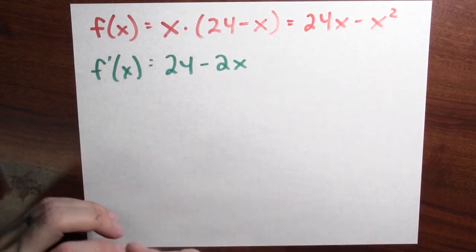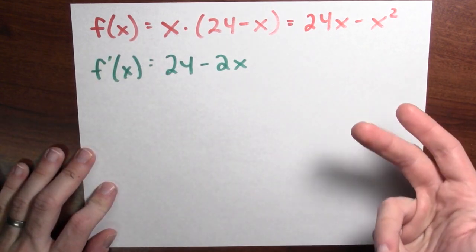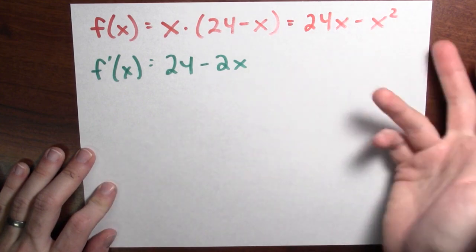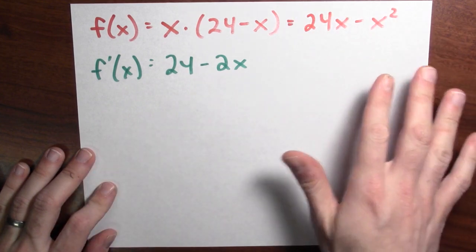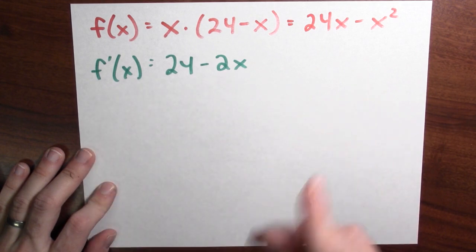I'm trying to find critical points, right? But critical points are where the derivative doesn't exist or where the derivative is equal to 0. Now this function is just a polynomial, so it's differentiable everywhere. So I don't have to worry about the function's derivative not existing somewhere.